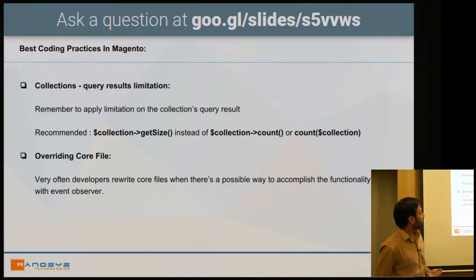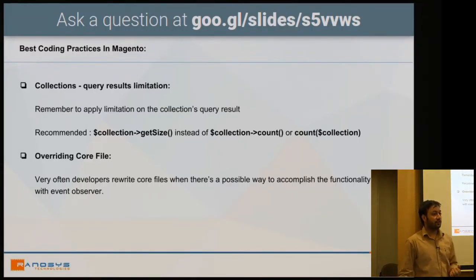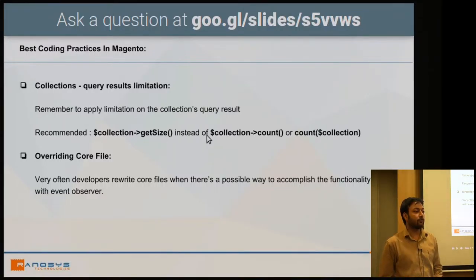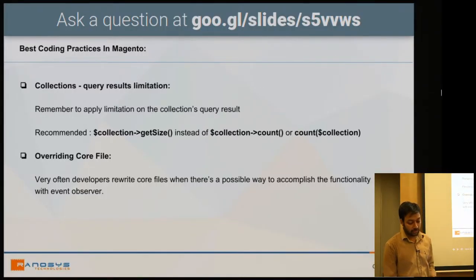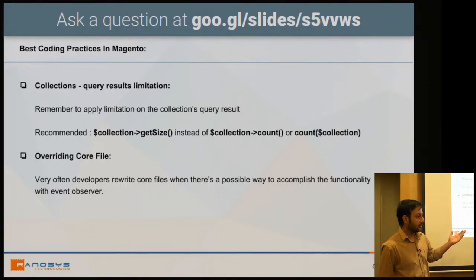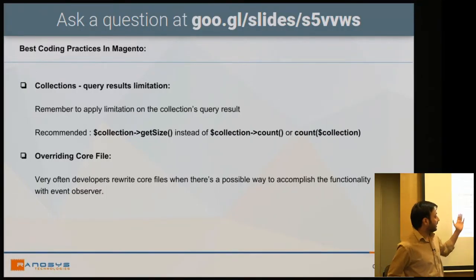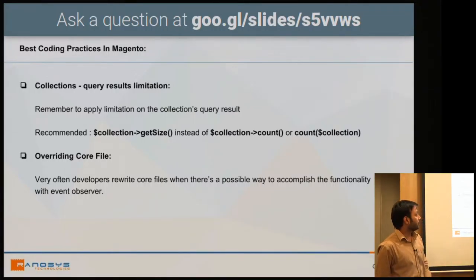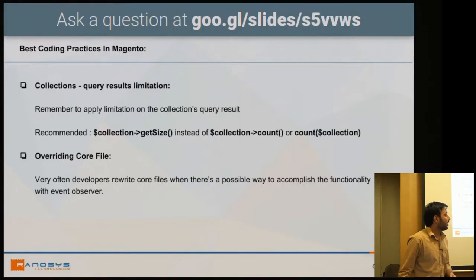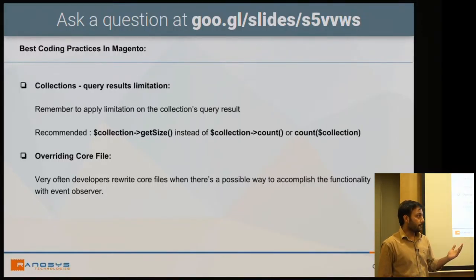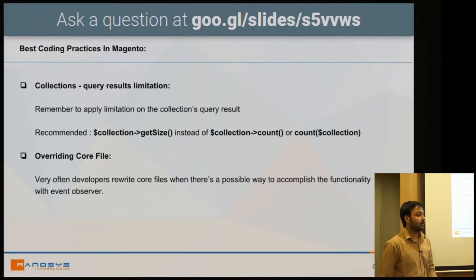The fifth issue is query result limitations. When fetching data in Magento, we generally don't apply limits — for example, fetching a particular user's data without restricting the query size, which scans the whole database. We should use set_limit or get_limit on collections. Also, we should use get_size instead of get_count, because count scans the entire database each time, while get_size directly returns the size of the collection already retrieved.